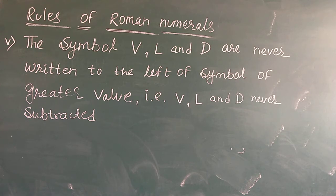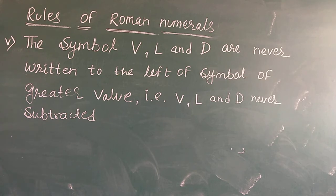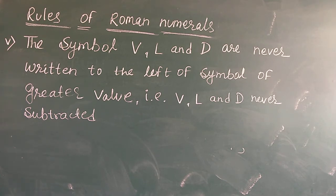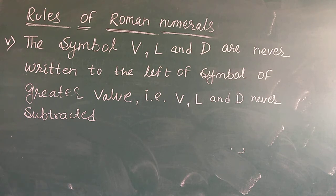The last rule for Roman numerals: you cannot subtract V, L and D from any greater value. The symbols V, L and D are never written to the left of a symbol of greater value. In short, V, L and D cannot be subtracted from any greater symbol value.